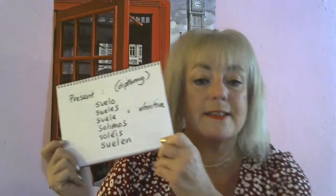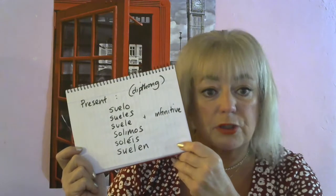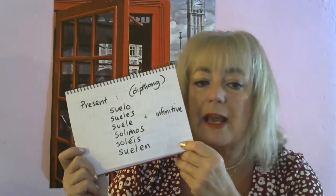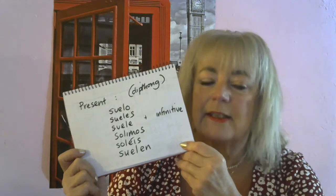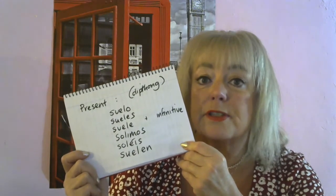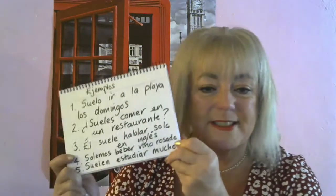The good thing about soler is if we use it in the present tense — now it is a diphthong, so the O changes to UE. So we've got: suelo, suele, suele, solimos, soleis, suelen. That is the different persons for what you normally do, plus the infinitive of whatever it is. Notice that the first person, suelo, also means floor. So we have to be careful with that, though normally it's obvious from context. For example, 'I normally clean the floor' would be suelo limpiar el suelo — interesting, but manageable.